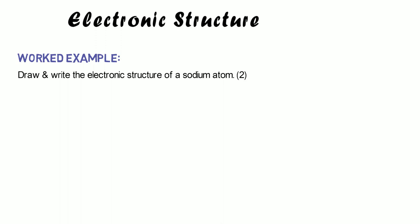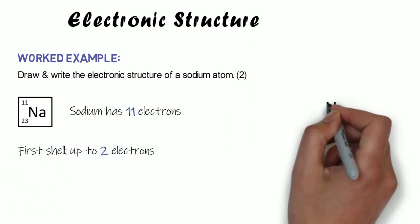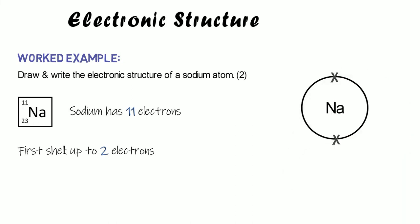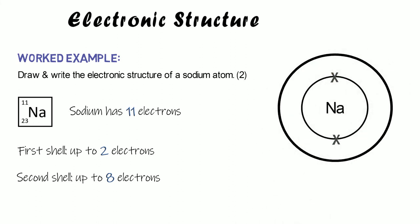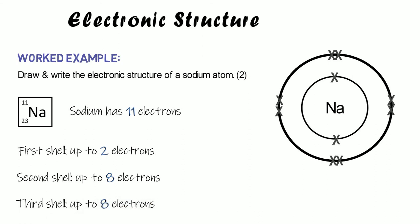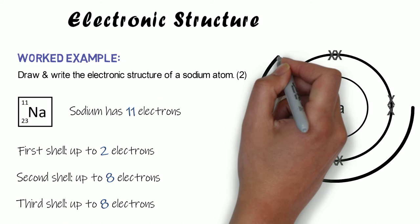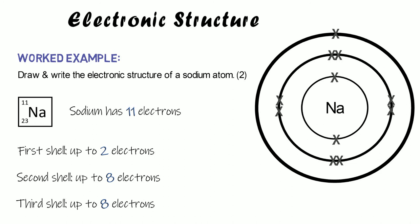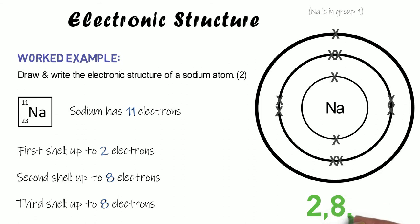Our last worked example is sodium. The periodic table tells us sodium has 11 electrons because it has 11 protons. We draw our first shell, which holds up to two electrons. We need a second shell because we have more to place — that second shell holds up to eight, so we fill it with eight. That gives us ten altogether, but sodium has 11, so we have one electron left. We draw a third shell and put one electron in it. That makes sense because sodium is in group one, so it must have one electron in its outer shell. The written structure is 2,8,1.